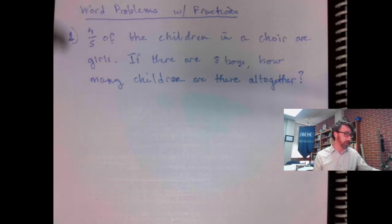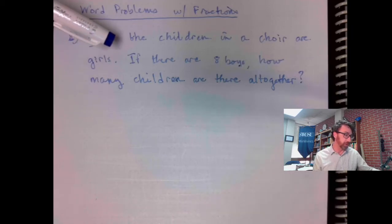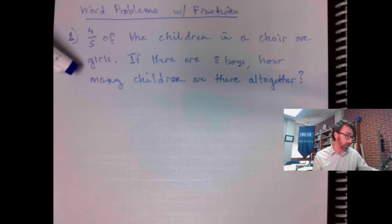In this first example, let's check out this problem. Four-fifths of the children in a choir are girls. If there are eight boys, how many children are there altogether?